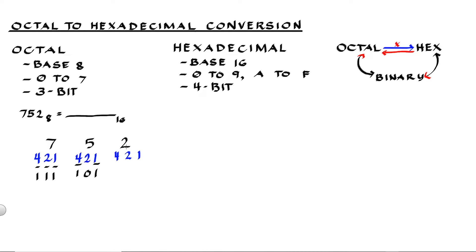Next we have 2. To get 2, all you need to use is the 2 position, so that is 1. And since we don't use 4 and 1, those are 0s. So 2 octal is equivalent to 0, 1, 0 in binary.